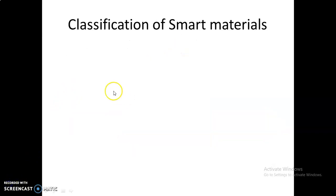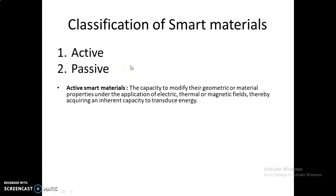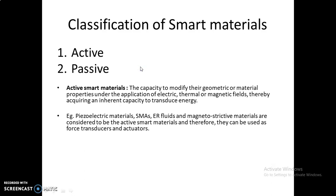Smart materials are broadly classified into active smart materials and passive smart materials. Active smart materials have the capability to modify their geometry or mechanical properties under different physical properties — for example, electrical, thermal, magnetic properties, etc. Ultimately, they have the capability to act as actuators and transduce energy. The best examples of active smart materials are piezoelectric materials, shape memory alloys, electrorheological fluids, and magnetic materials. These materials are highly capable as force transducers and actuators.